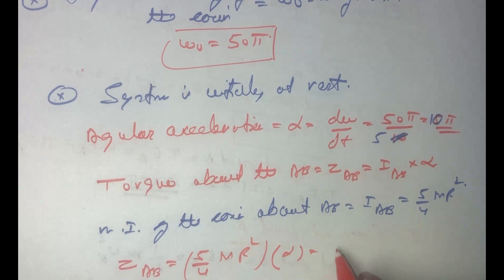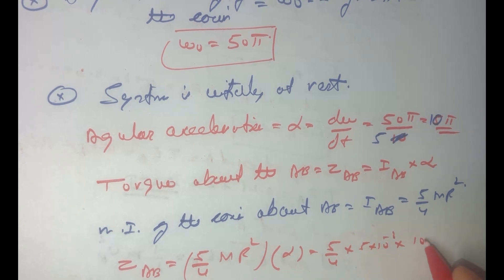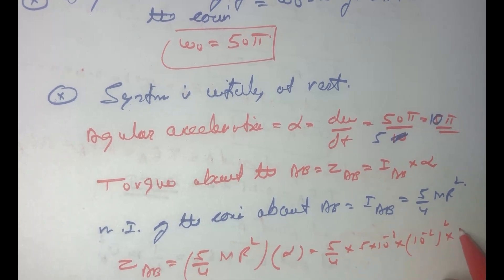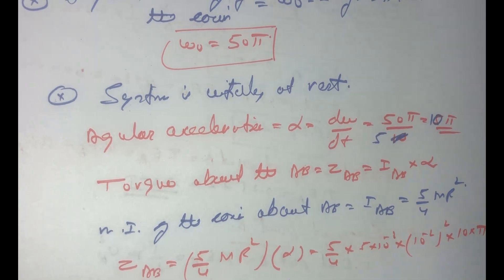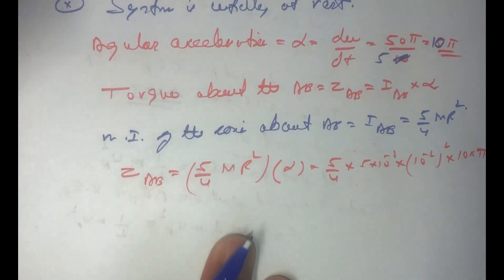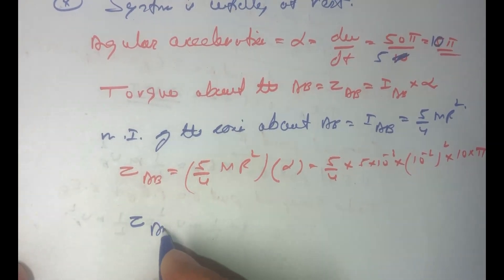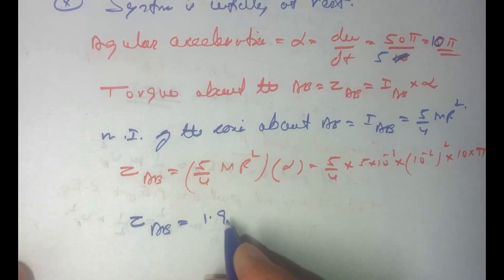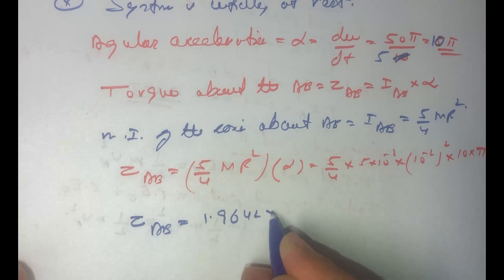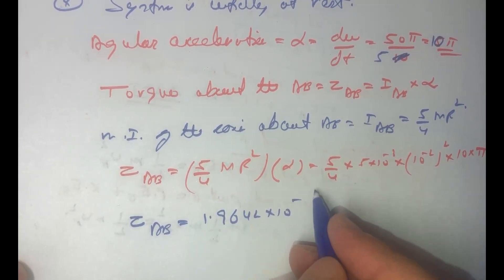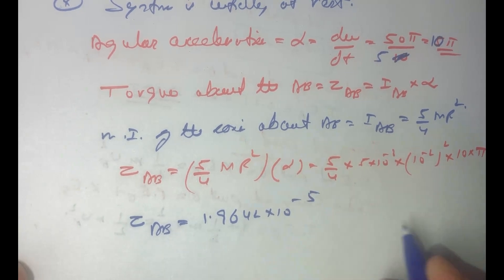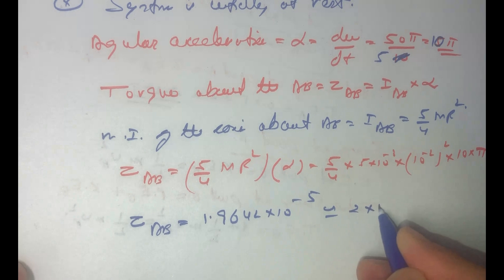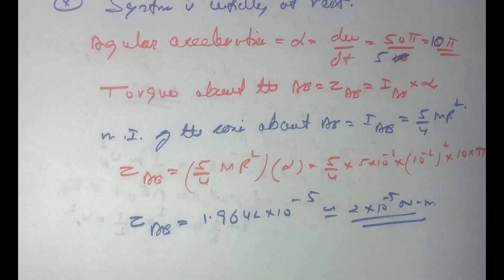Substituting the values we get 5 by 4, mass is 5 gram which will be 5 into 10 to the power minus 3, radius is 1 centimeter so this will be 10 to the power minus 2 whole square and alpha is 10 pi. So we can say torque AB will be equal to 1.9642 into 10 to the power minus 5, and this can be approximately equal to 2 into 10 to the power minus 5 newton meters.